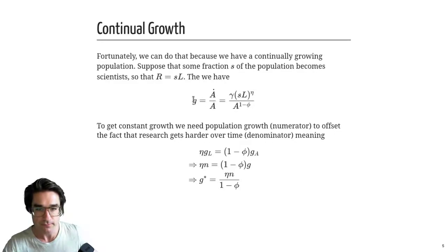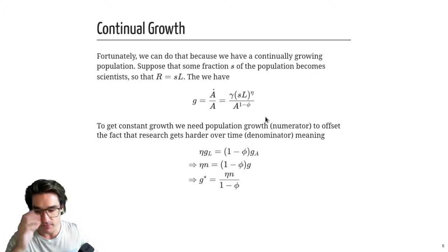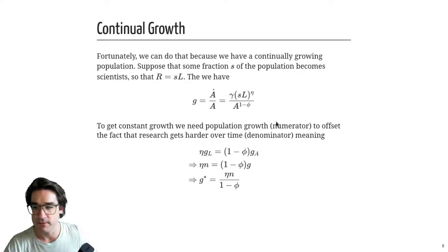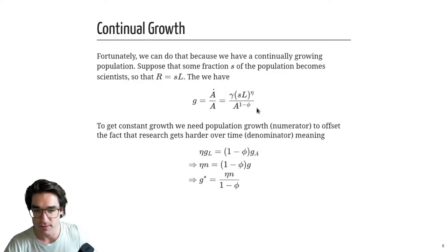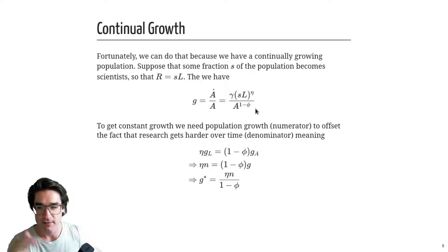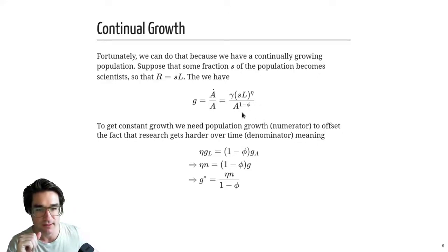Taking the growth rate equation and substituting R = S·L, we want to find when there's constant growth — meaning G is constant. For the ratio to be constant, the numerator and denominator must grow at the same rate. The numerator has γ·(S·L)^η: γ and S are constants, so the changing part is L^η, which grows at rate η·N. The denominator is A^(1-φ), which grows at rate (1-φ)·G.